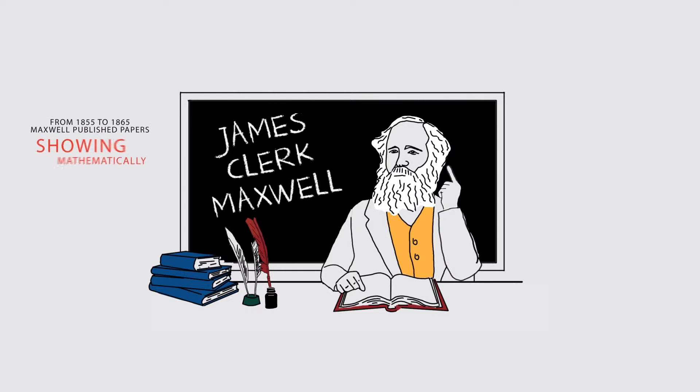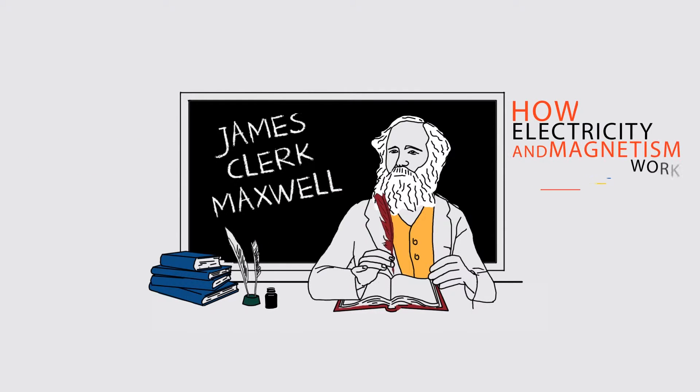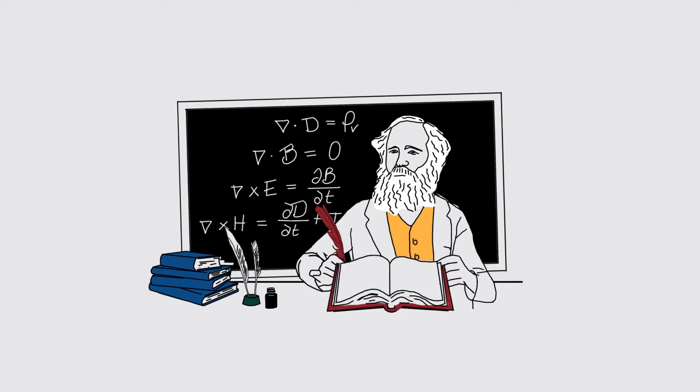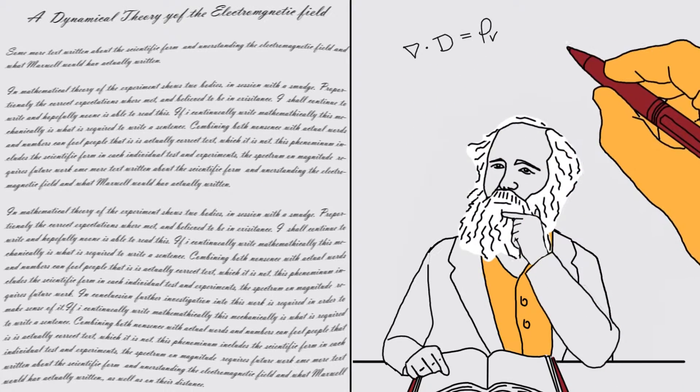From 1855 to 1865, Maxwell published papers showing mathematically how electricity and magnetism work. Although we write them a bit differently these days, they are still called Maxwell's equations.